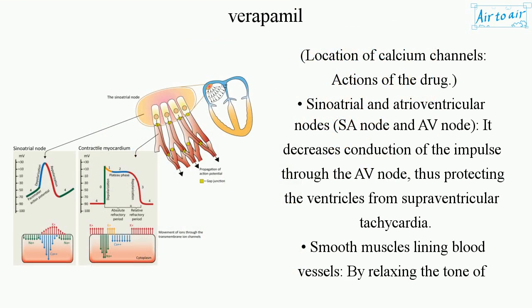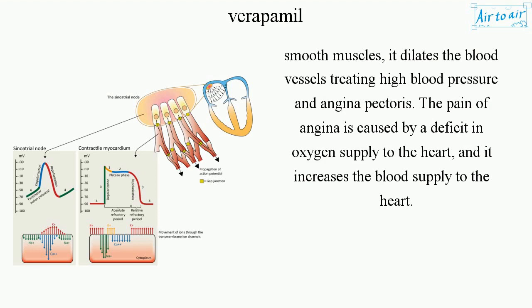Location of calcium channels — Actions of the drug: At the sinoatrial and atrioventricular nodes, it decreases conduction of the impulse through the AV node, thus protecting the ventricles from supraventricular tachycardia. At smooth muscles lining blood vessels, by relaxing the tone of smooth muscles, it dilates the blood vessels, treating high blood pressure and angina pectoris. The pain of angina is caused by a deficit in oxygen supply to the heart, and verapamil increases blood supply to the heart.